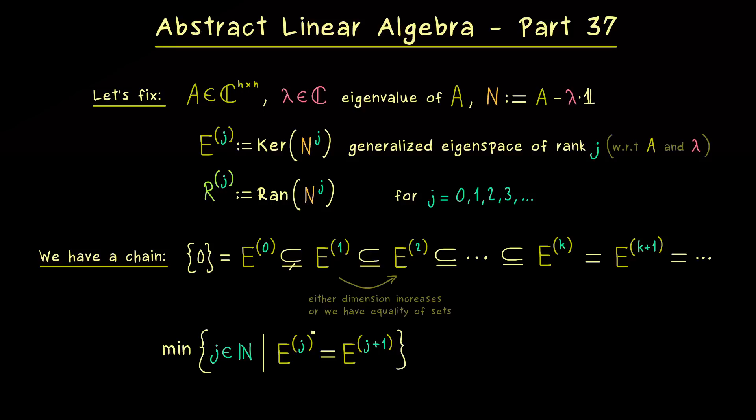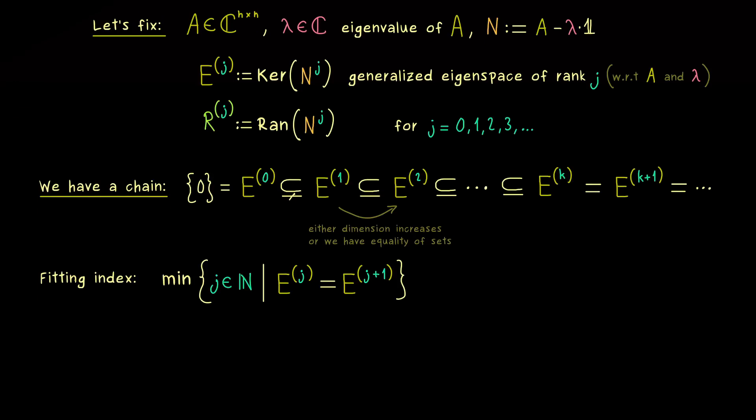In other words, this will be the first step in the chain where no increase in the dimension is happening. And exactly the index to this step is what we call the fitting index. And in this video I will just denote it by a lowercase d. And now this d could be 1 or a larger natural number, but we definitely know it exists as a finite number.